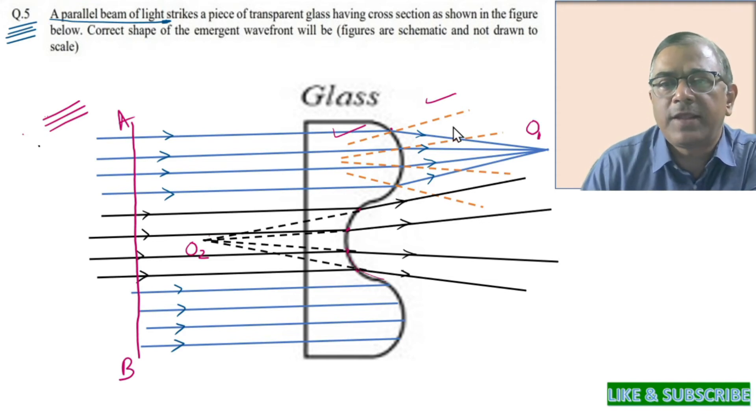We already know that the wavefront is always perpendicular to the rays. So let us try to draw the wavefront for the emergent rays. This is how it should look like.